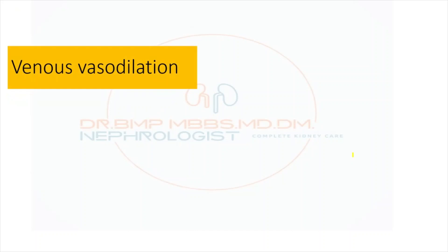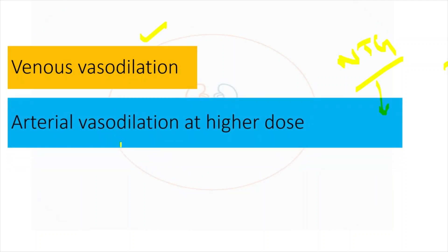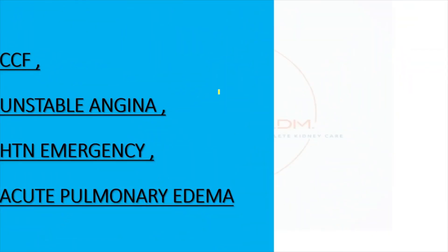Nitroglycerin causes vascular dilation by binding to the endothelium, releasing nitric oxide, which acts on cyclic GMP and causes vascular relaxation. It causes both venous and arterial vasodilation. At lower doses (up to approximately 50 micrograms per minute), it primarily causes venous vasodilation; at higher doses, it causes arterial vasodilation as well. It also has an anti-platelet effect.